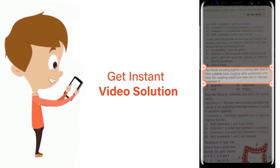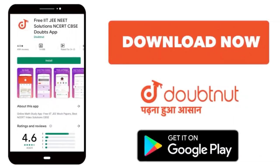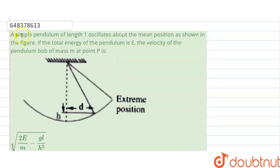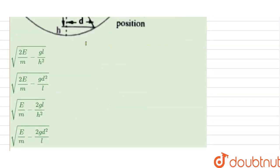Our question is: a simple pendulum of length l oscillates about the mean position as shown in the figure. If the total energy of the pendulum is E, the velocity of the pendulum bob of mass m at point P is to be found. Different options are given.